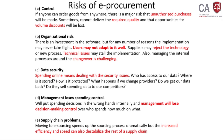What are the risks of e-procurement? One risk is control — there can be unauthorized purchases. For example, if you put your credit card details into a website form and unknowingly click something, they may charge your card without proper authorization. That is unauthorized payment. Another risk is that the system cannot always deliver the required quality or volume discounts.